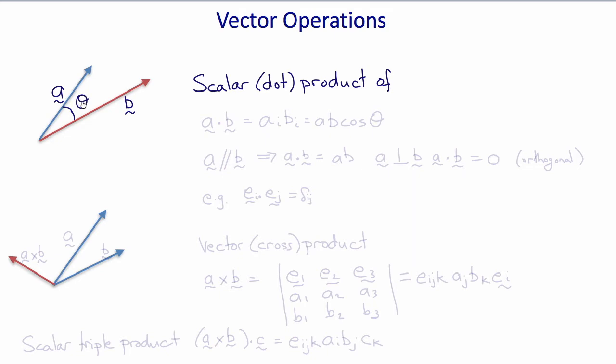then the dot product or scalar product of a and b is a dot b which equals ai bi and is equal to the magnitude of a times the magnitude of b times the cosine of the angle between them.